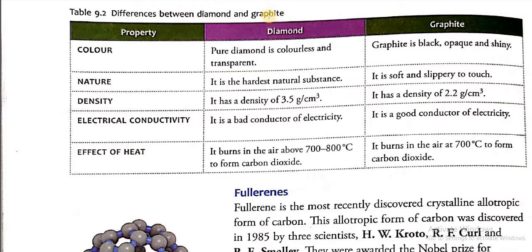We have mentioned the differences. First, according to color, pure diamond is colorless and transparent whereas graphite is black, opaque and shiny. Based on nature, diamond as we know is the hardest natural substance.